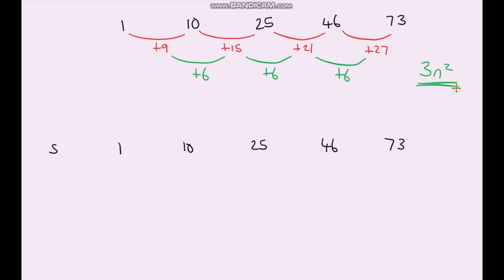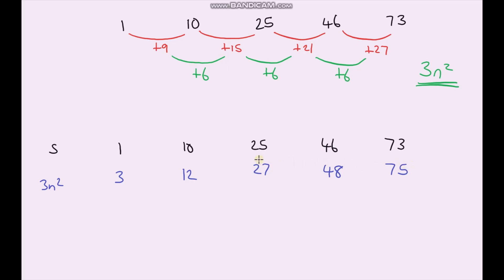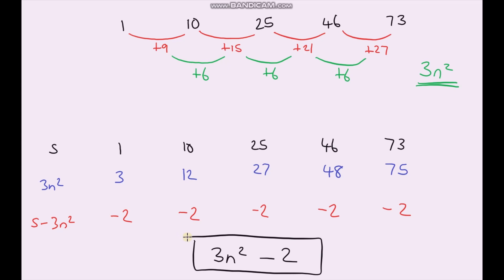So 3n squared is the first part. Let's write down what 3n squared gives us: 1²×3=3, 2²×3=12, 3²×3=27, 4²×3=48, 5²×3=75. That would be our sequence if it were just 3n squared. But our actual sequence is 1, 10, 25, 46, 73. We can see that we need to subtract 2 each time. So the nth term of our quadratic sequence is 3n²−2.